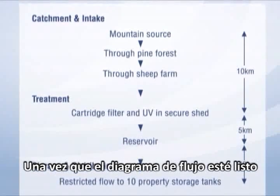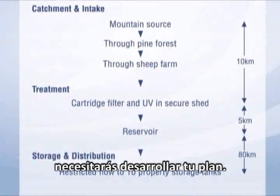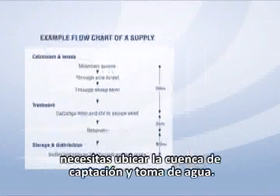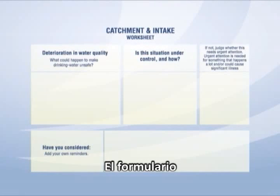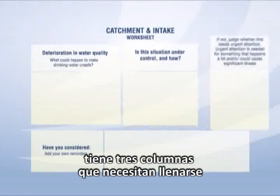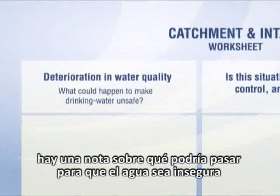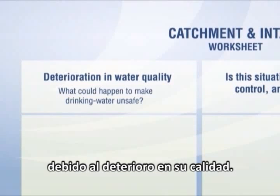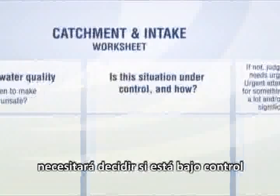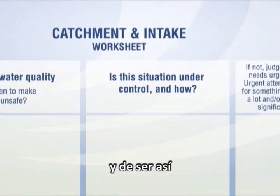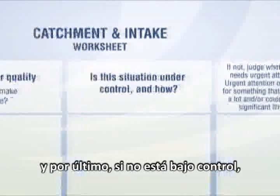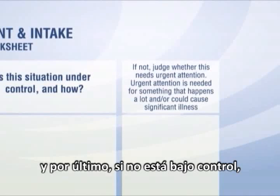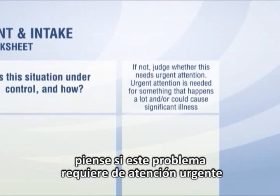Once your flow chart is done, you need to start developing your plan. First, you need to look at catchment and intake. In the worksheet, there are three columns which need to be filled out. First is a note of what could happen to make water unsafe through deterioration in water quality. Secondly, you need to decide whether this is under control, and if it is, state how it is under control. And thirdly, if it is not under control, you need to judge whether this issue needs urgent attention.